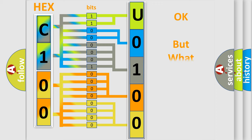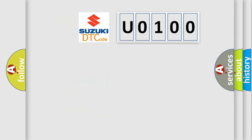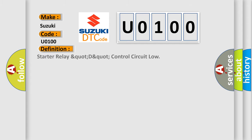The number itself does not make sense to us if we cannot assign information about what it actually expresses. So, what does the Diagnostic Trouble Code U0100 interpret specifically for Suzuki car manufacturers? The basic definition is: Starter Relay Control Circuit Low.